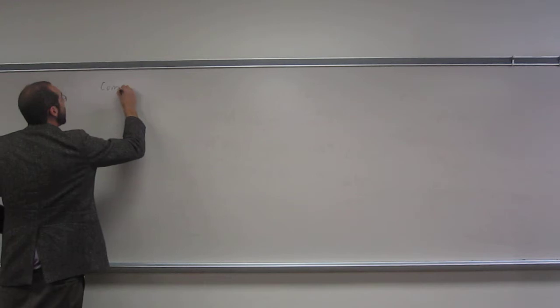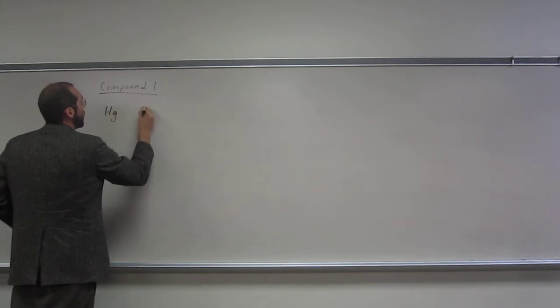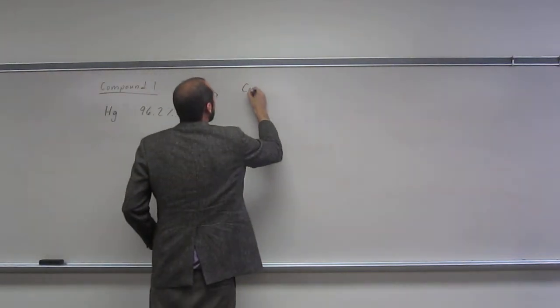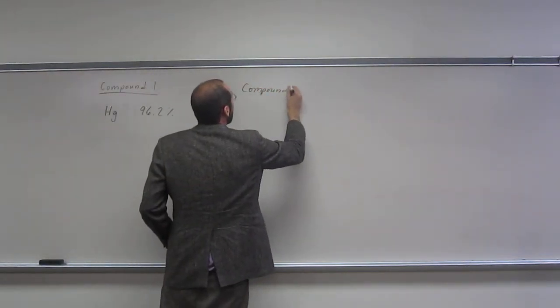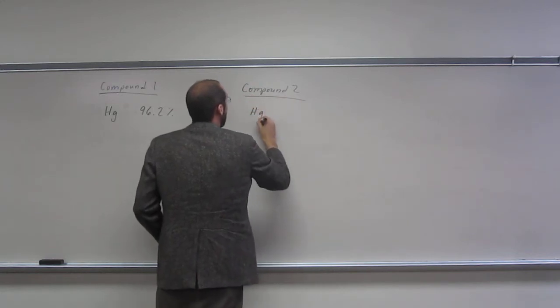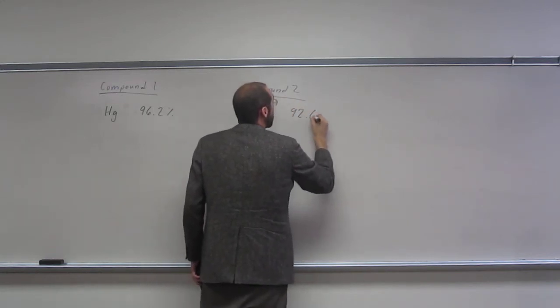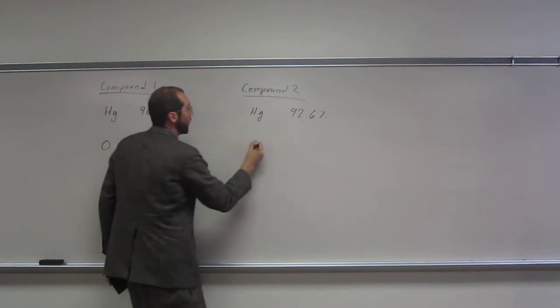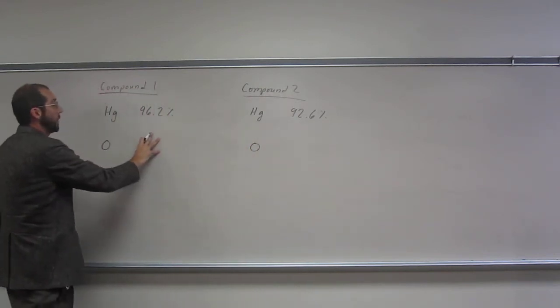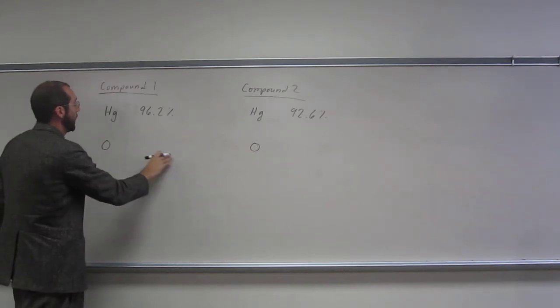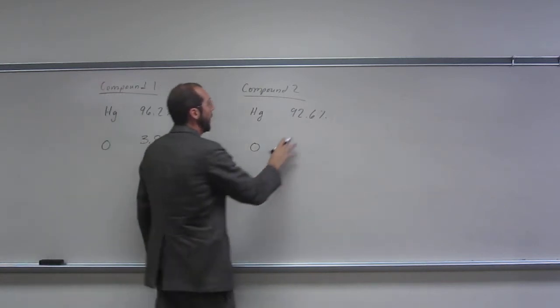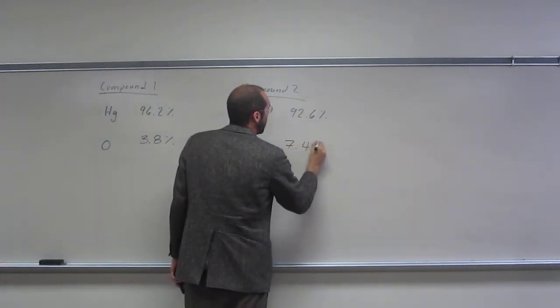We'll say compound one, mercury 96.2%, compound two, mercury is 92.6%. If we know that it's just mercury and oxygen in these two compounds, the opposite percentage must be the case for oxygen. So 3.8% here and 7.4% here, right?